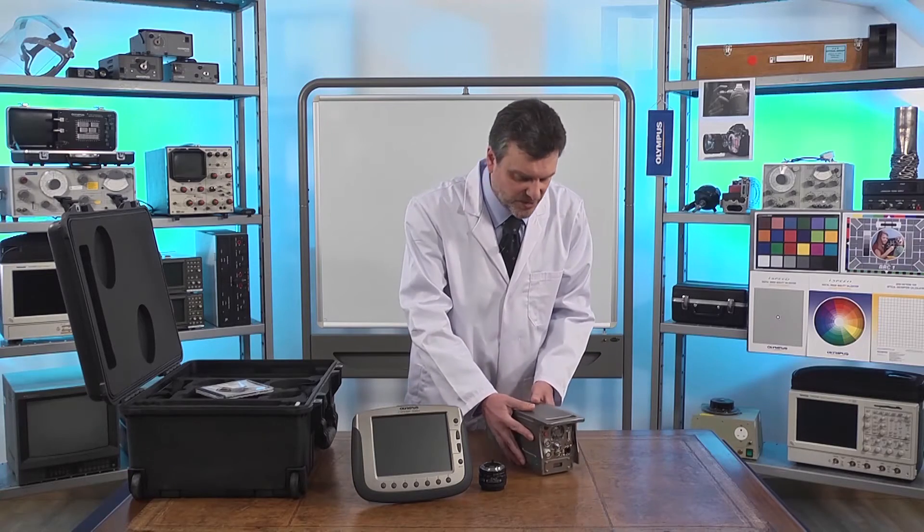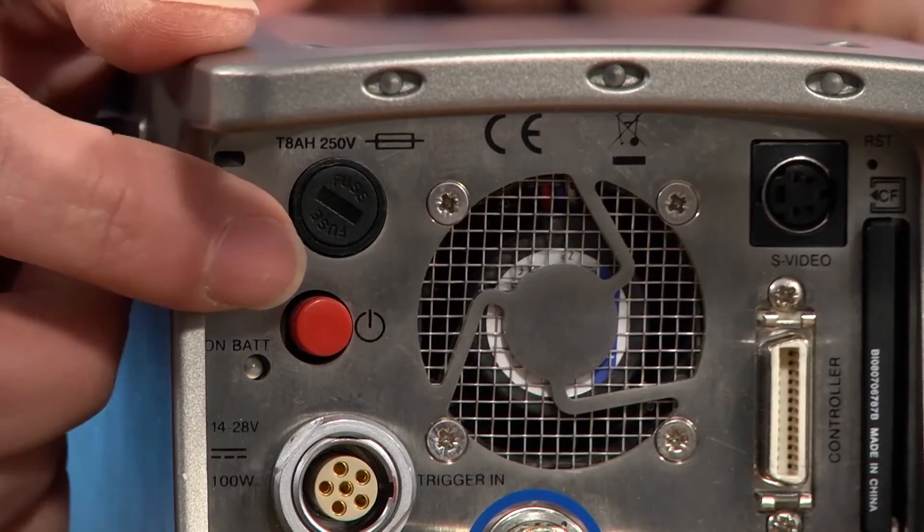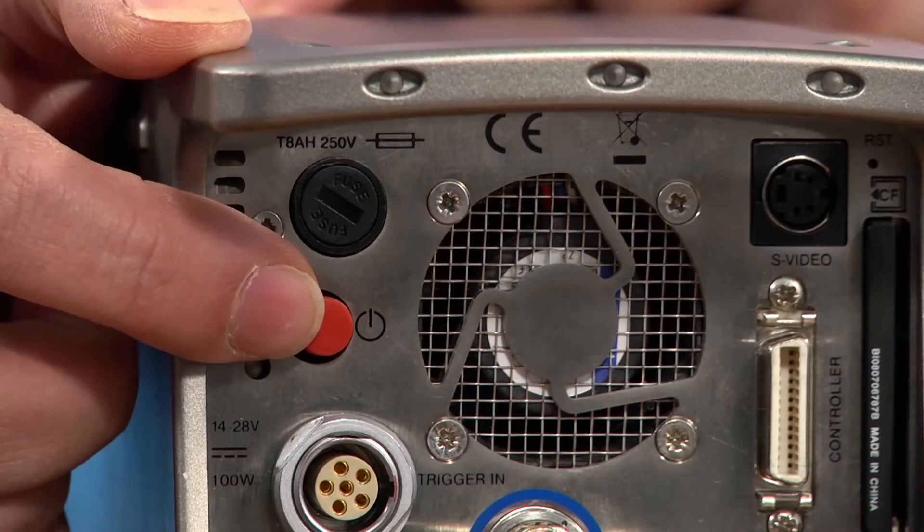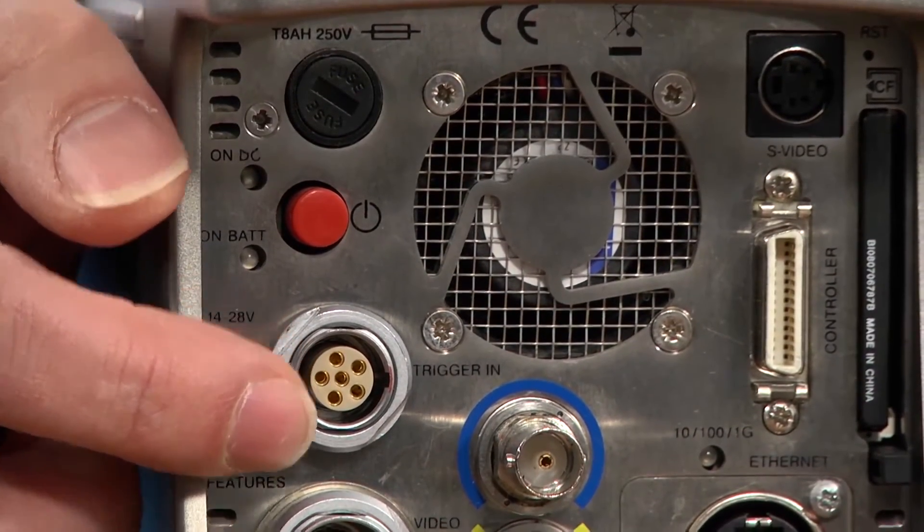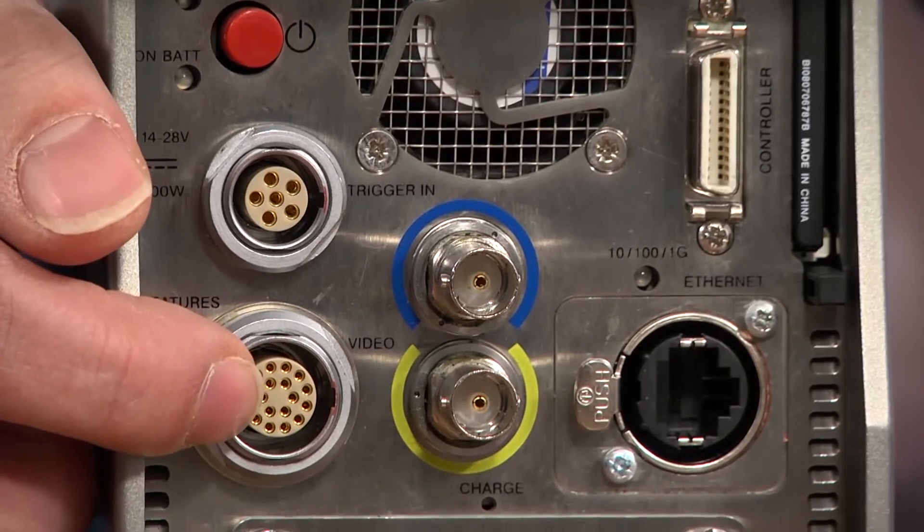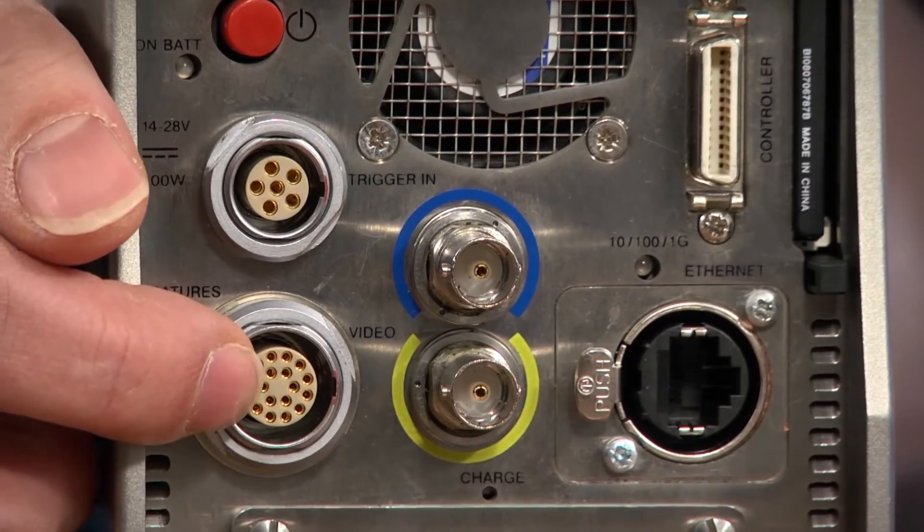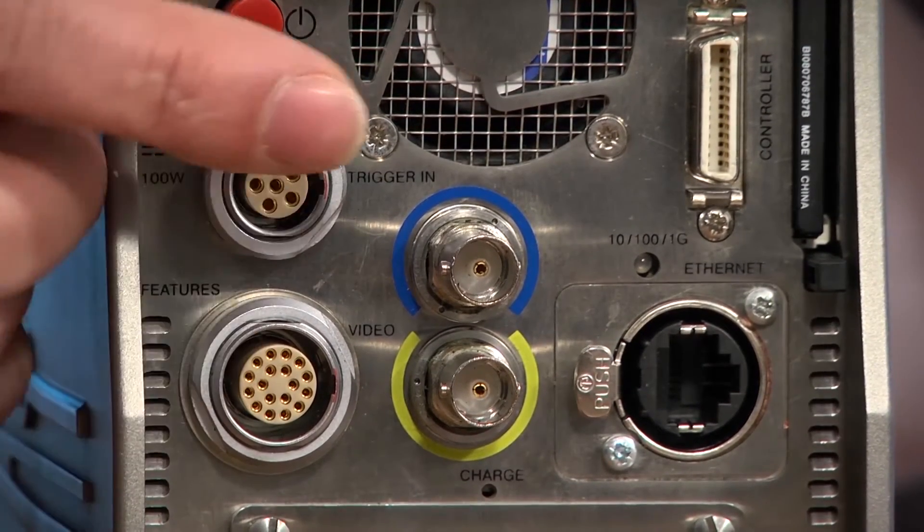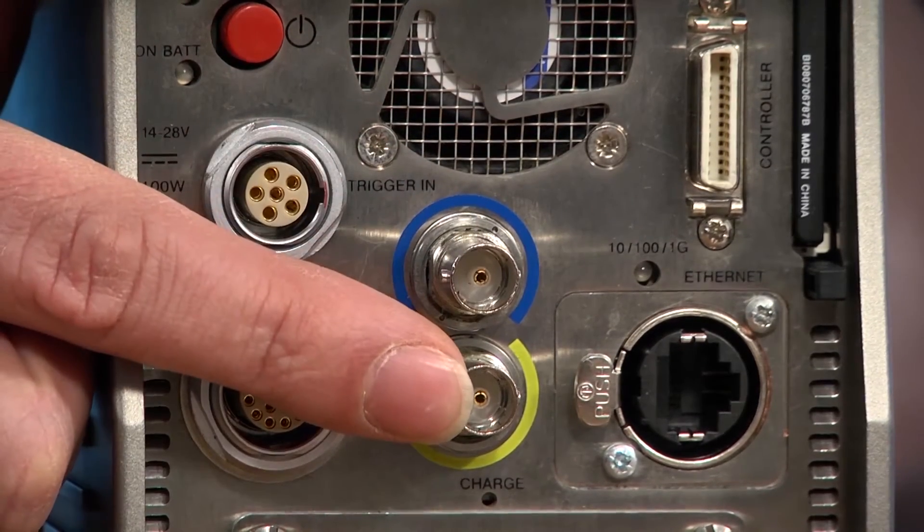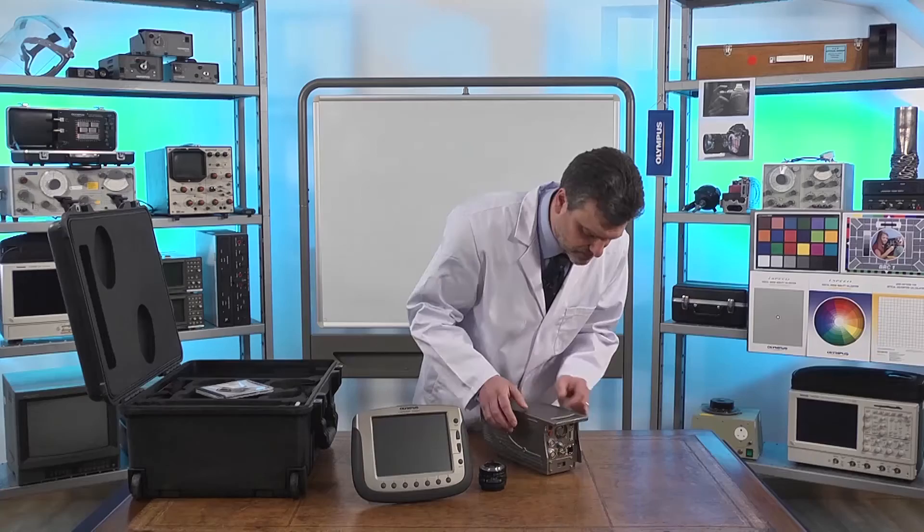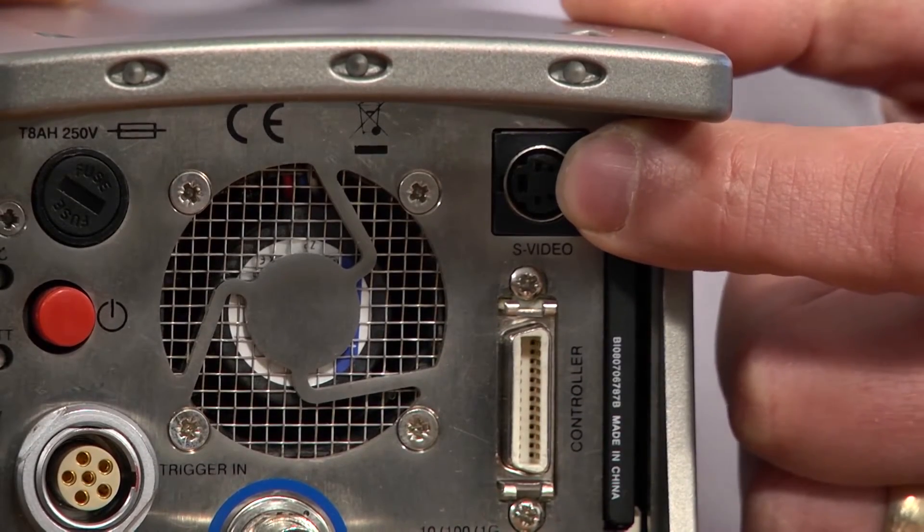If I rotate so you can see the back panel, over here we have the power switch, then there's the power input, then the feature connector with multiple trigger and sync inputs and outputs. The trigger input is on a BNC, we have a BNC video output, there's an S video output.